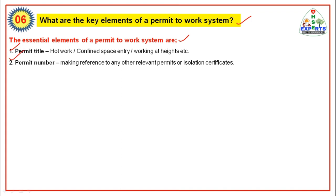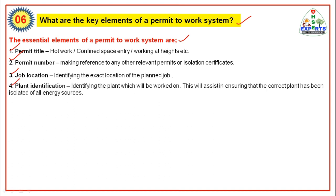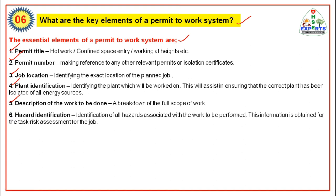The permit number references any other relevant permits or isolation certificates. Job location — identifying the exact location of the planned job. Plant identification — identifying the plant which will be worked on, to ensure the correct plant has been isolated of all energy sources. Description of the work to be done — a full breakdown of the scope of work. Hazard identification — identification of all hazards associated with the work to be performed, obtained from the task risk assessment for the job.